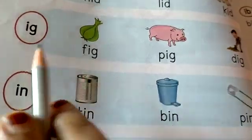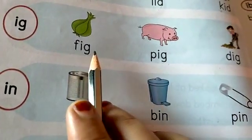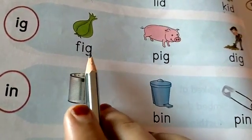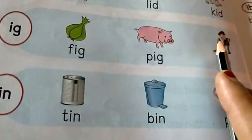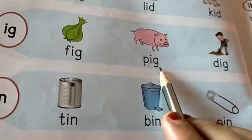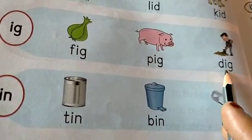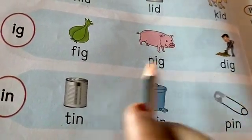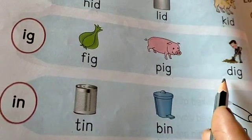Next is I g. With I g, here we are making three words. F I g, fig. P I g, pig. D I g, dig. Fig, pig, dig.